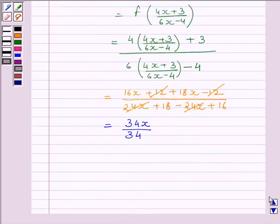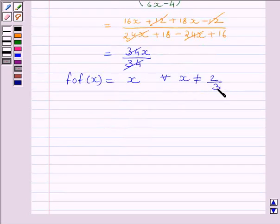This is further equal to x, as 34 and 34 cancel, and we get f(f(x)) equal to x for every x not equal to 2/3.